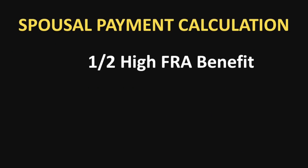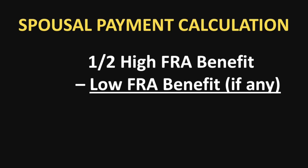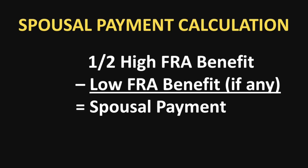Each component of this benefit is reduced based on the age of entitlement to each portion of the benefit. So to calculate this properly, you have to start by knowing how much of a benefit is actually the spousal payment. There's a really simple formula to figure this out quickly: you just take one half of the higher earner's primary insurance amount and subtract the lower earner's primary insurance amount. The remainder is the spousal payment.